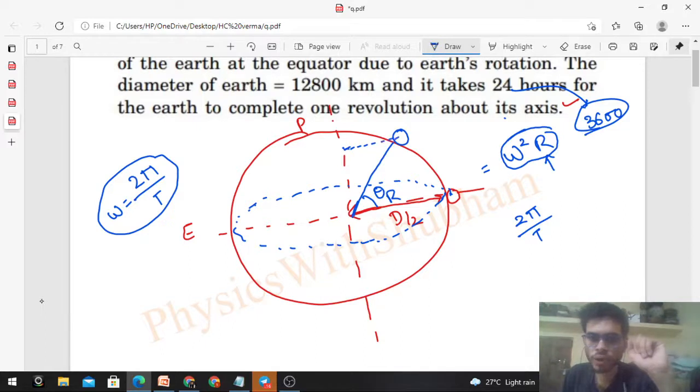So the acceleration will be omega square into small r. This will be the value of acceleration. Omega remains the same. The angular parameters, angular speed, angular velocity remain the same, right? Omega for this earth - for every particle on the surface of earth, omega will be constant because that is 2π upon T. All particles complete one rotation in the same time.